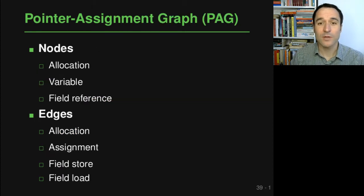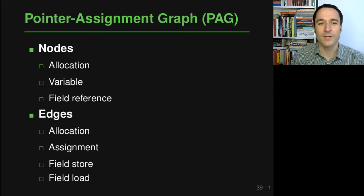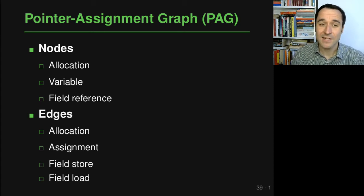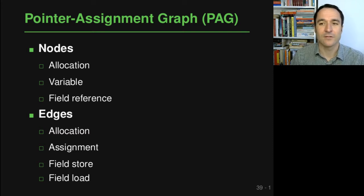Let's start by looking at this pointer assignment graph, which is at the basis of the SPARK framework. As every graph, it consists of nodes and edges. There are nodes to represent allocations, variables, and field references, and the edges correspond to allocations that are assigned to something, assignments between variables, and also field stores and field loads.